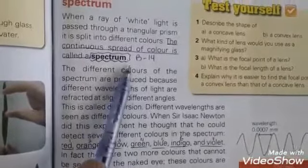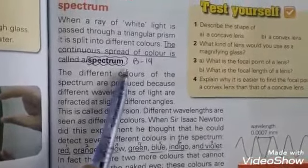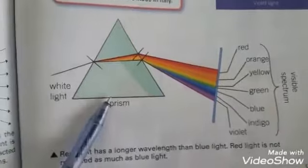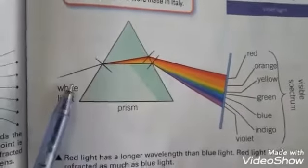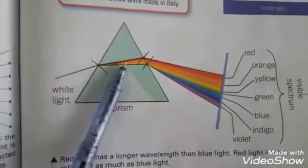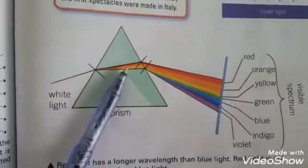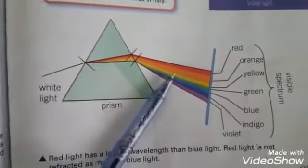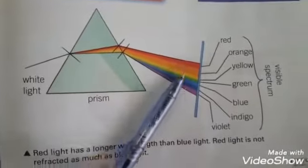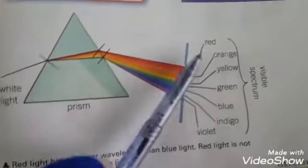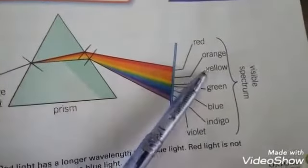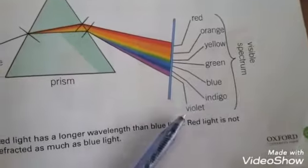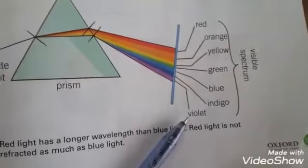In this figure, white light when passed through this prism splits into different colors. There are seven colors: red, orange, yellow, green, blue, indigo, and violet.